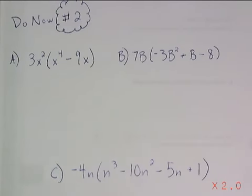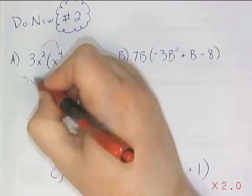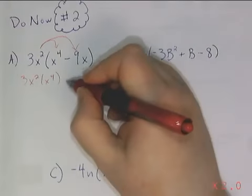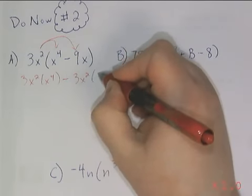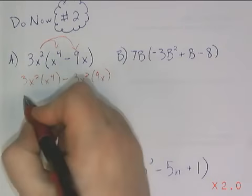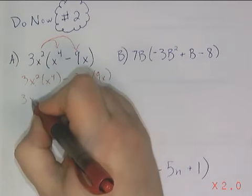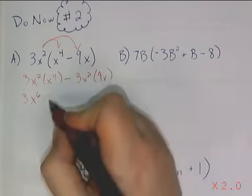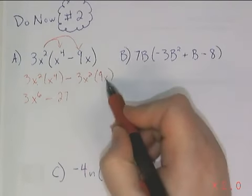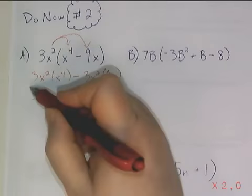Now that you're back, let's see how well you did. I need to multiply 3x squared times x to the fourth and 3x squared times 9x, copying down my minus sign. With a coefficient of 3 — x squared multiplied by x to the fourth is x to the sixth power, minus 3 times 9 is 27. x squared times x is x to the third power. There's our answer: 3x to the sixth minus 27x to the third.